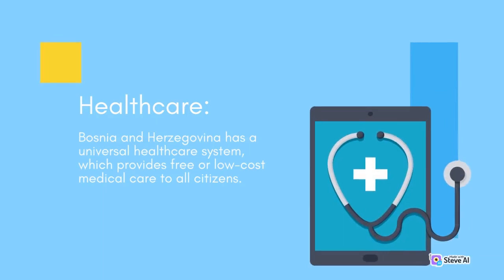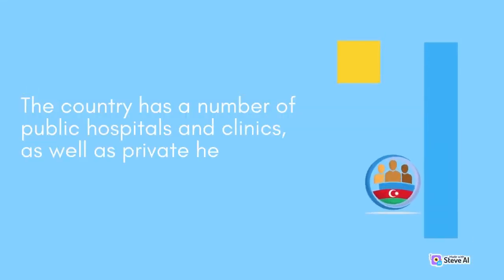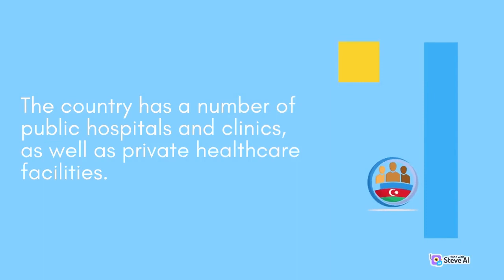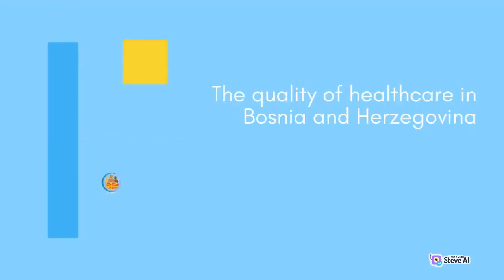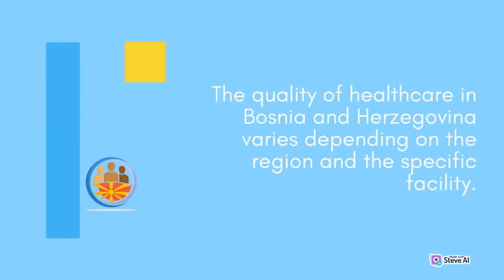Bosnia and Herzegovina has a universal healthcare system, which provides free or low-cost medical care to all citizens. The country has a number of public hospitals and clinics, as well as private healthcare facilities. The quality of healthcare varies depending on the region and the specific facility.